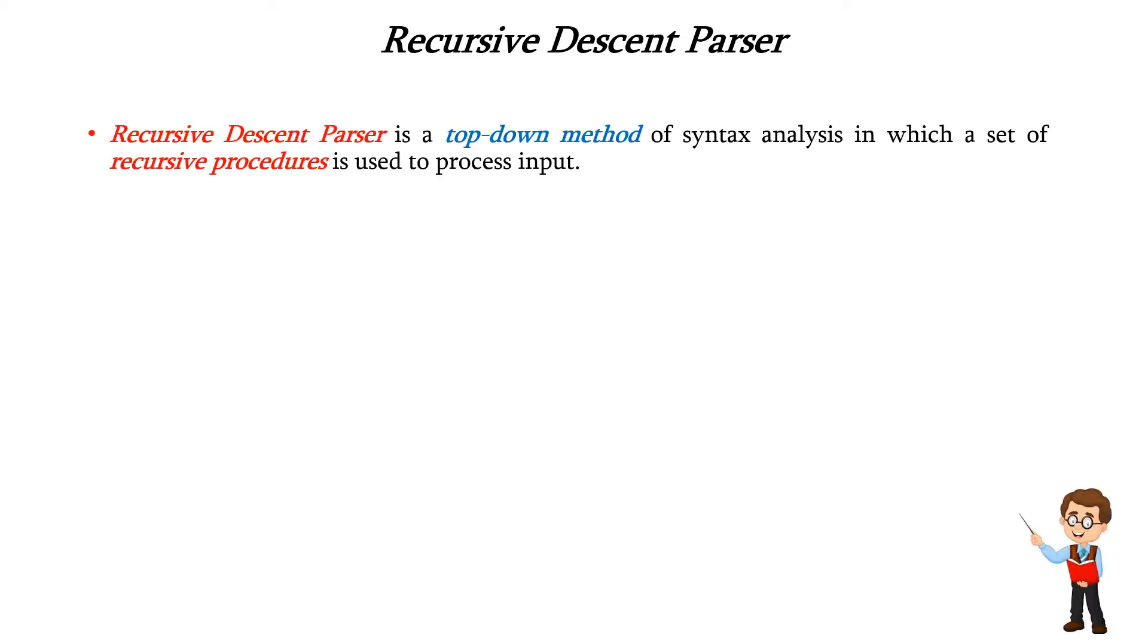What is a recursive descent parser? It is a top-down method of syntax analysis phase, in which a set of recursive procedures is used to process the given input.